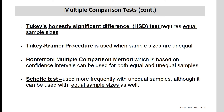Here are some statistical tests used to look for pairwise significant mean differences after an overall significant finding from an F-test. Tukey's Honestly Significant Difference requires equal sample sizes. The Tukey-Kramer procedure is used when sample sizes are unequal. The Bonferroni multiple comparison method, based on confidence intervals, can be used for both equal and unequal samples. The Scheffé test is used more frequently with unequal samples, though it can be used with equal samples as well. The Bonferroni method is the most commonly used and will be used in the next few examples.